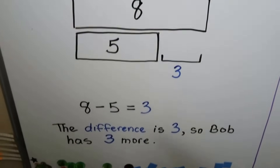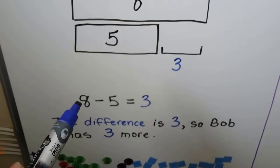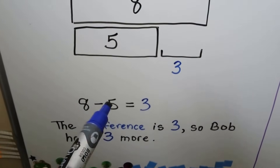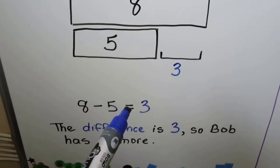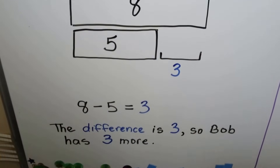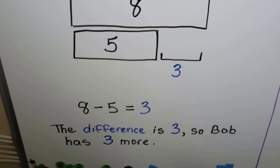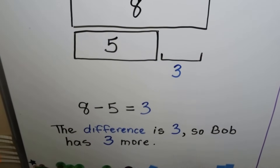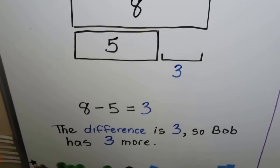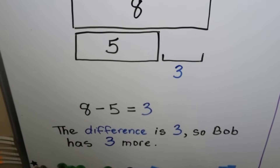We can write a number sentence: eight minus five is equal to three. The difference is three, so Bob has three more books than Tala.